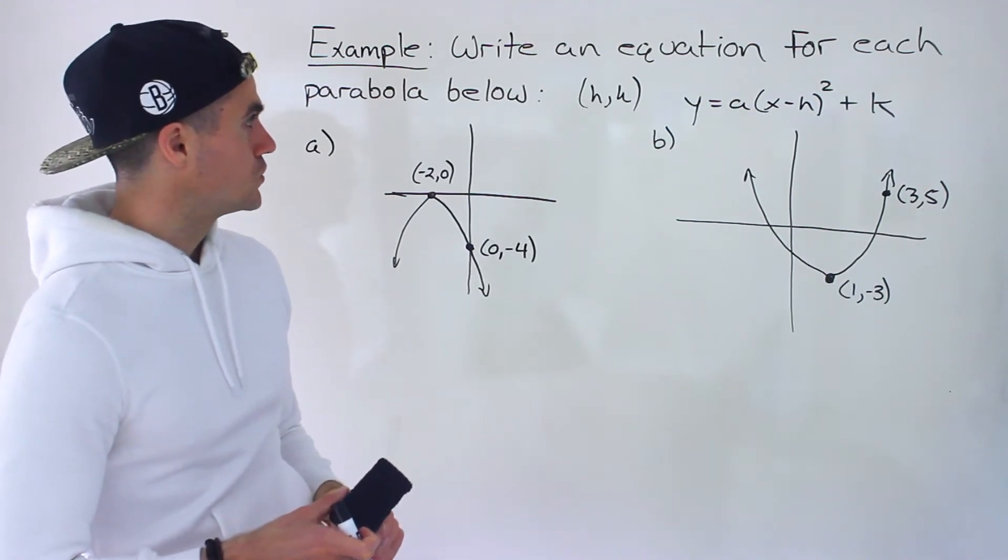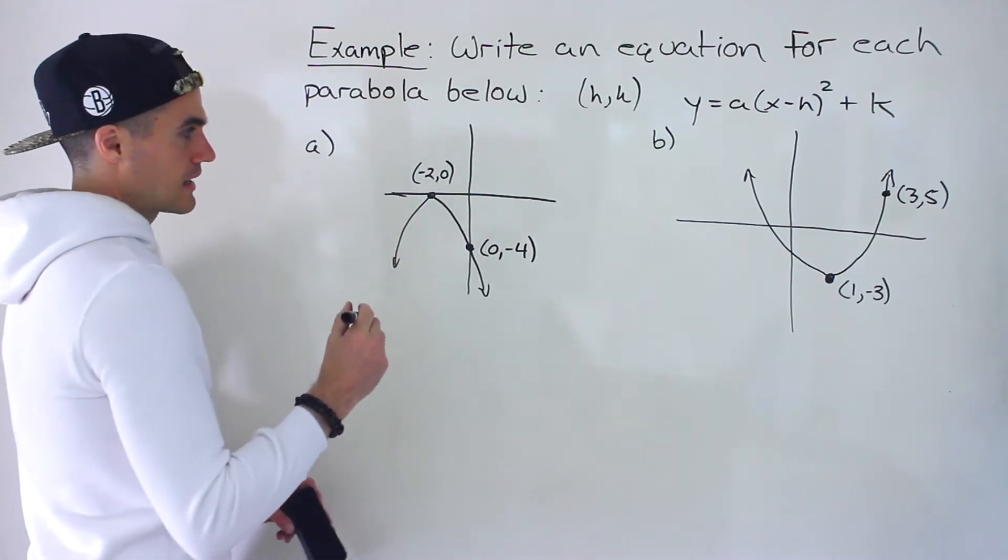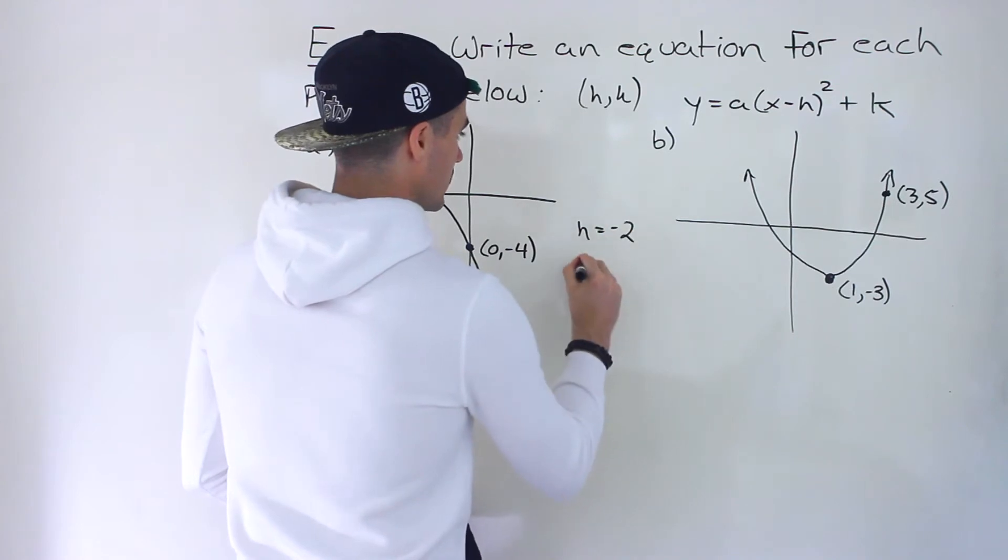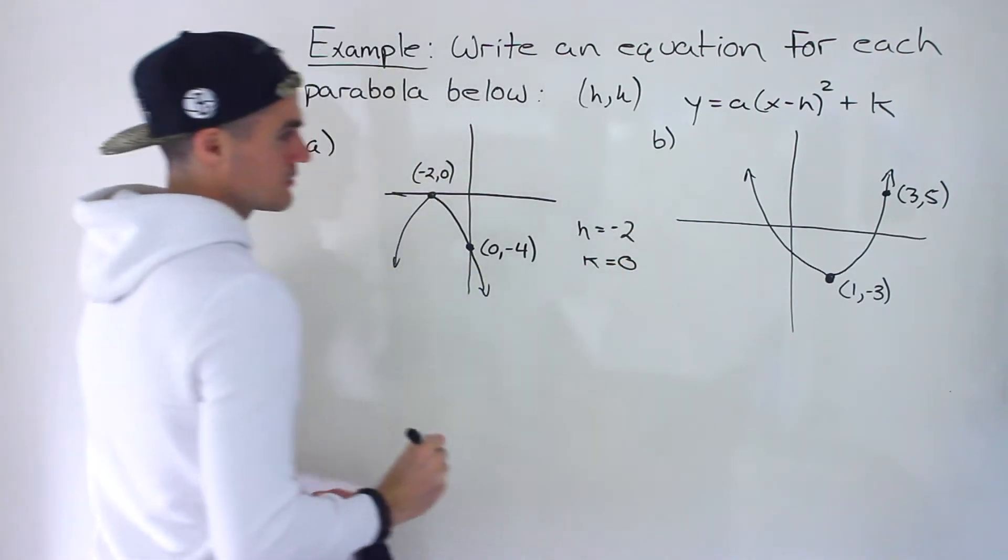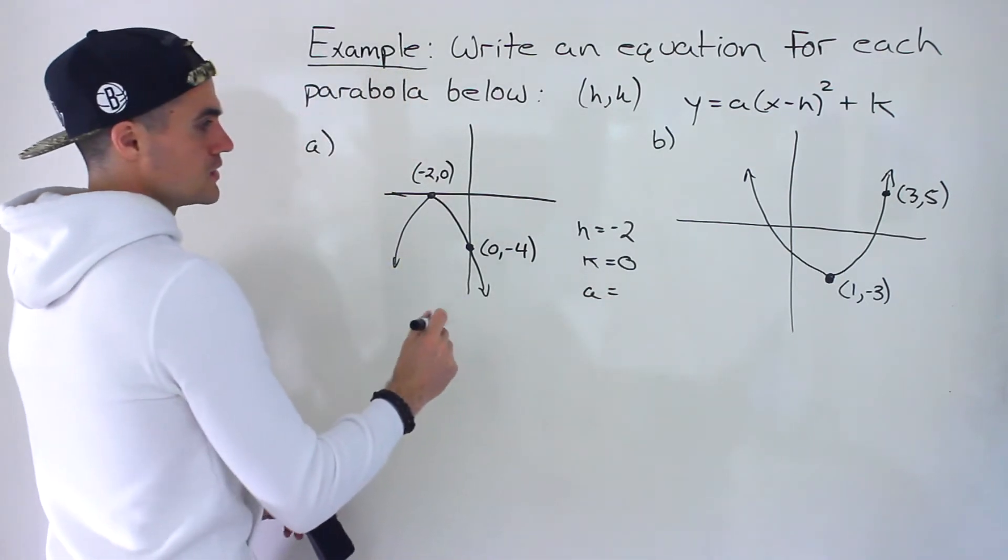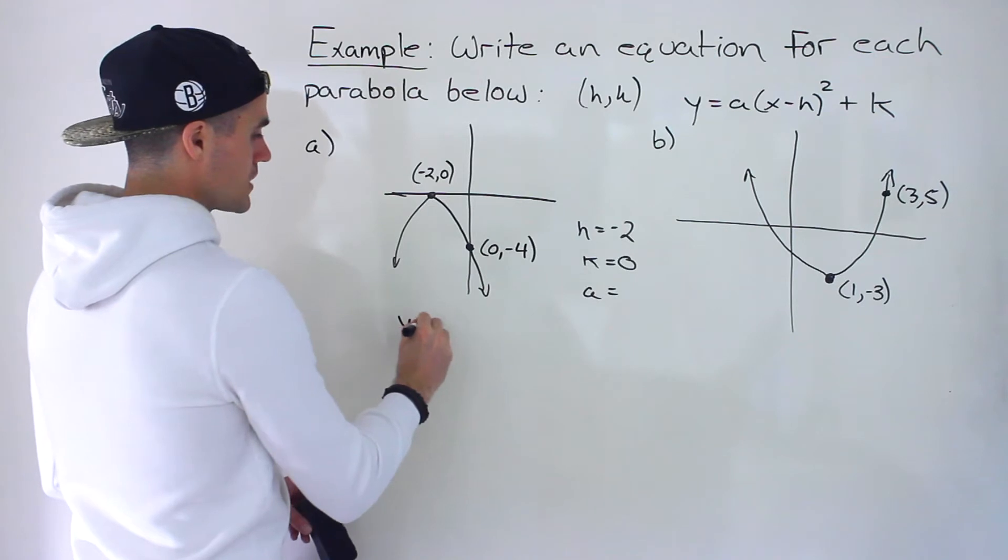Starting with part a here, notice the vertex is at negative two and zero. So the h is negative two and the k value is zero. All we have to do is solve for that a value. Let's first plug in the h and k into that general format. So we got y equals a, x minus negative two, which is like x plus two, squared.